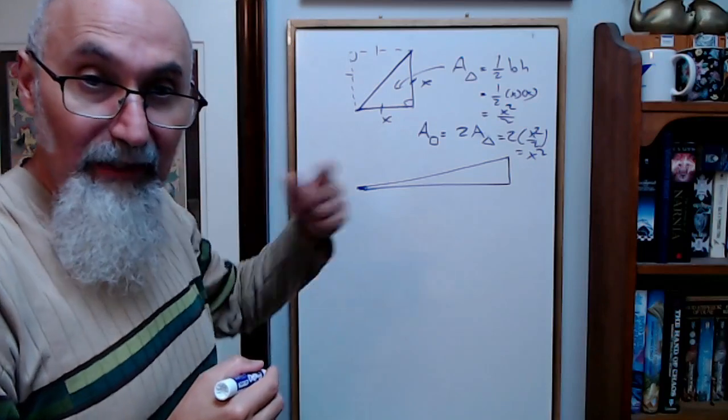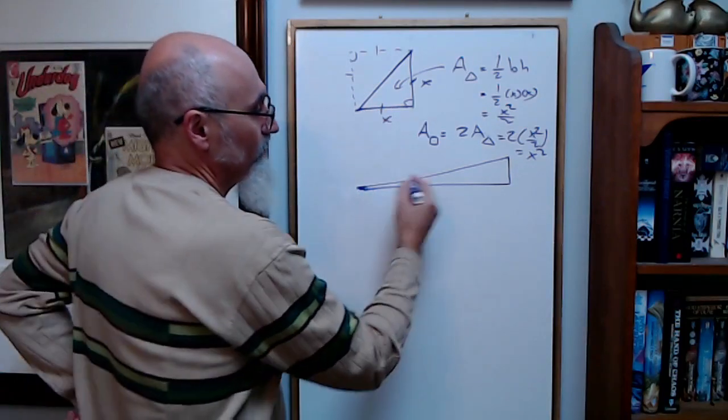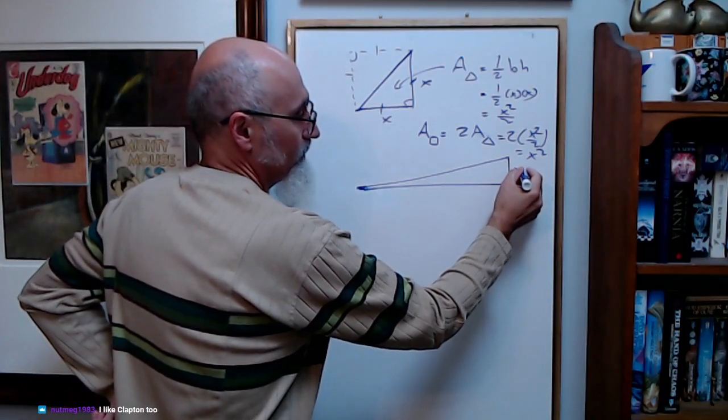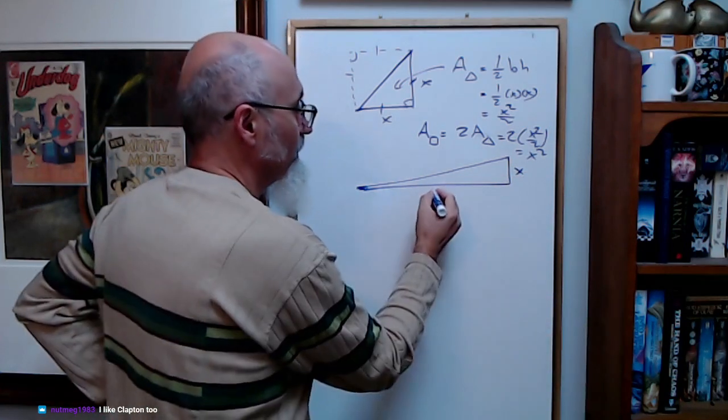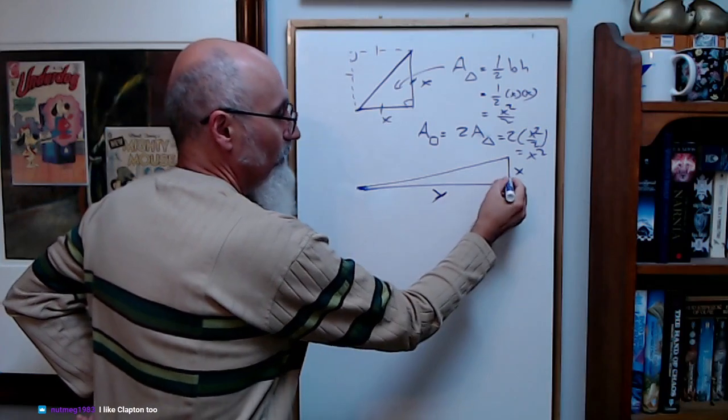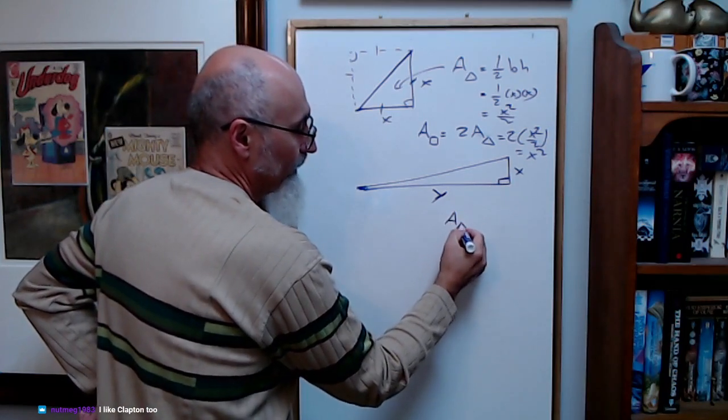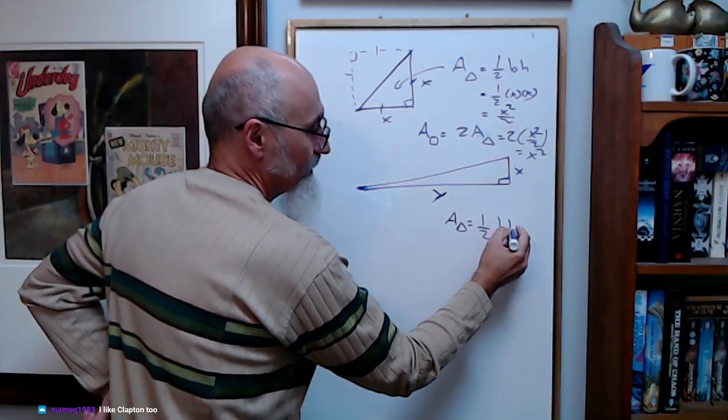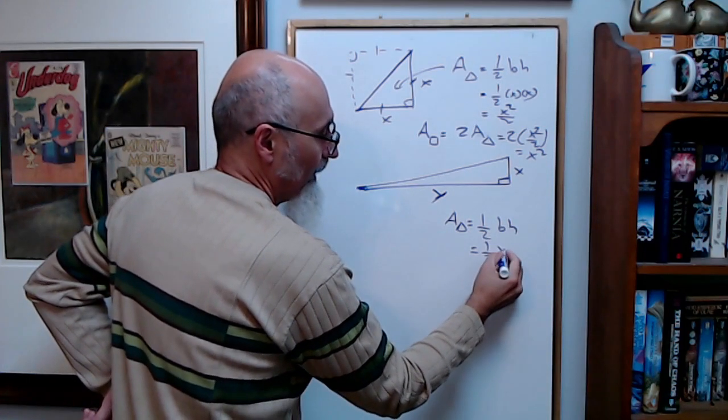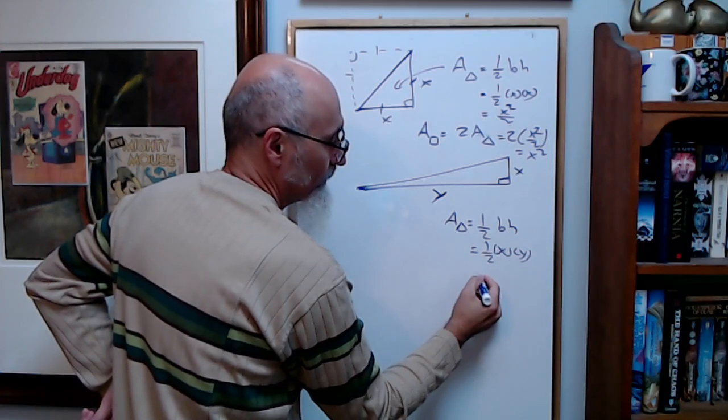Well, area of a rectangle—here's X, or let's call it base times that, or X and Y. Let's call it X and Y. Well, area of this triangle is the same: one-half base times height, which is equal to one-half X times Y, which is equal to XY over two.